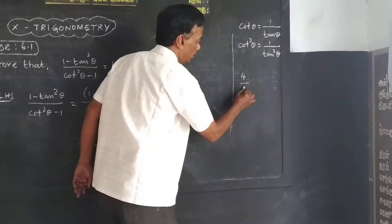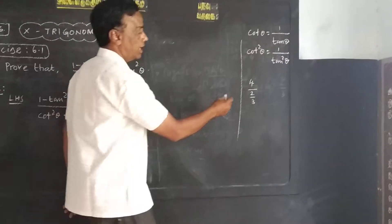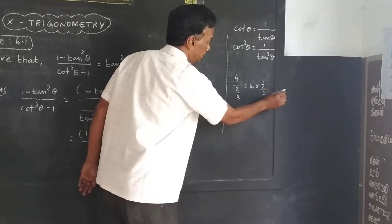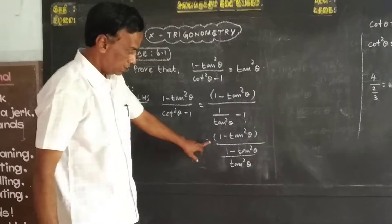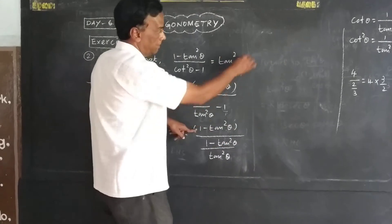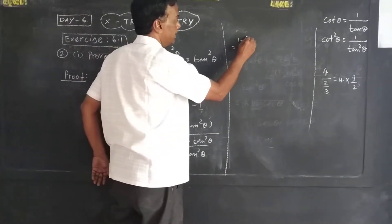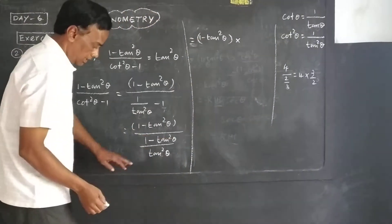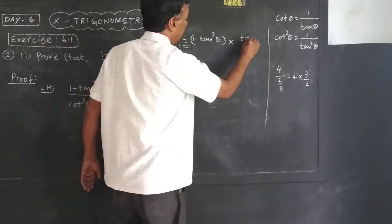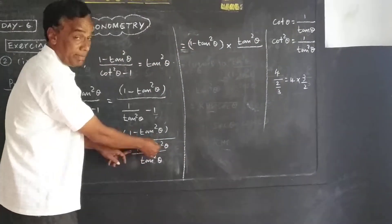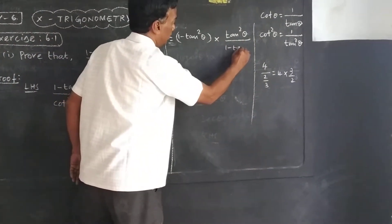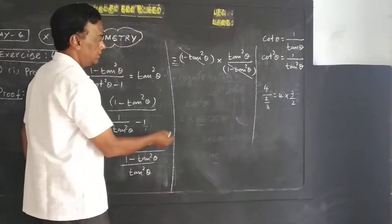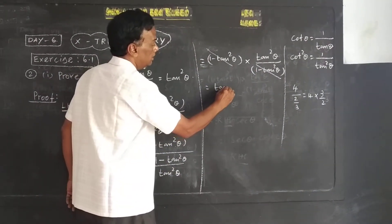Now, consider 4 divided by 2 over 3 is equal to 4, and minus 4 equals 1 — this is the reverse of the line: 3 by 2. We will write 1 minus tan squared theta. We will write 1 minus tan squared theta. This is equal to 1 minus tan squared theta. Tan squared theta by 1 minus tan squared theta. The 1 minus tan squared can cancel.